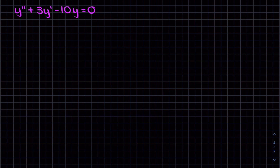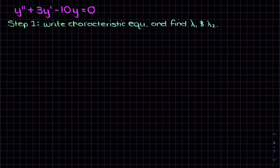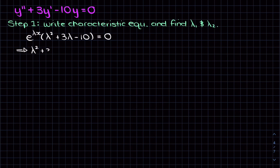Here we have a second order linear homogeneous ODE with constant coefficients, so we can use the characteristic equation method. Step one is to write the characteristic equation. We assume the solution takes the form of e to the lambda x. The coefficient in front of y double prime is multiplied by lambda squared, the coefficient in front of y prime is multiplied by lambda, and the coefficient in front of y just becomes the constant — turning the original ODE into a polynomial. Since e to the lambda x can never be zero, this implies lambda squared plus 3 lambda minus 10 equals zero. This is known as the characteristic polynomial or characteristic equation.